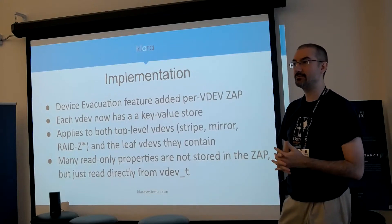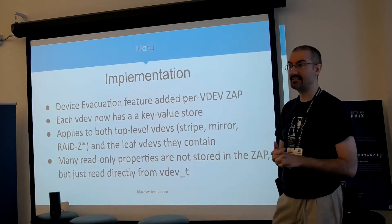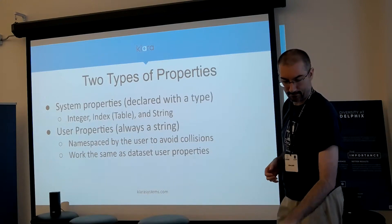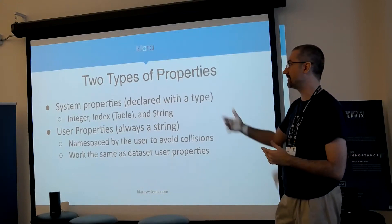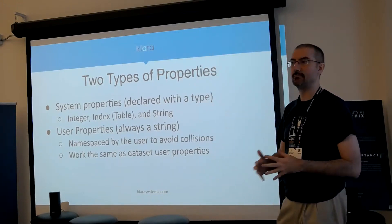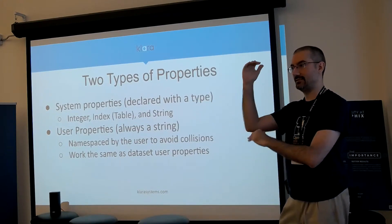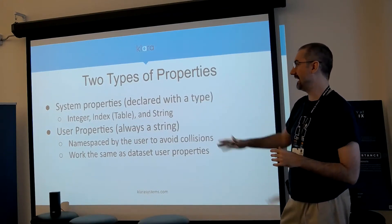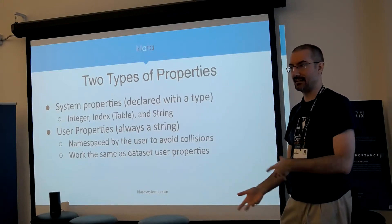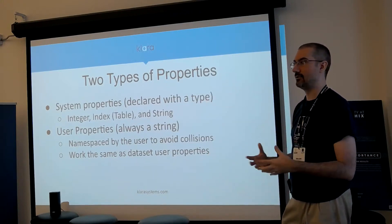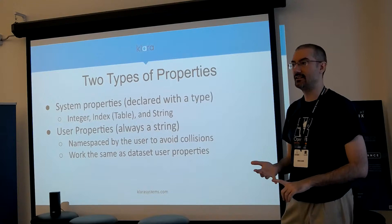The first step was adding a bunch of read-only properties, basically exposing a lot of the interesting fields from vdev_config and vdev_stats as read-only properties. Currently in the implementation there are two types of properties: system properties, which are declared in an enum and can be an integer, an index with a table of possible values, or a string; and user properties, which are always a string stored in the ZAP. System properties are usually stored in the ZAP as an integer or string, or some are read-only so we don't have to store them.